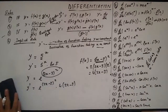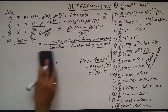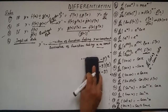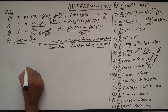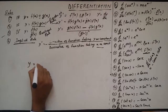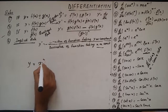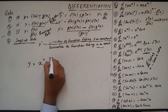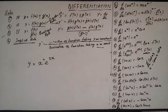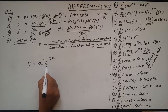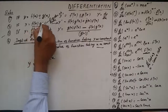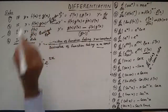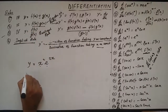Now y is equal to x² · e^(2x). We see that this is an exponential function multiplied by an algebraic function — a product of two functions — so we will apply the product rule.